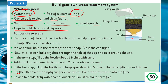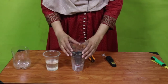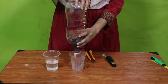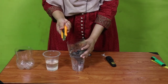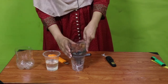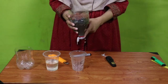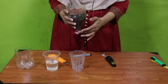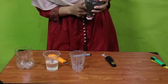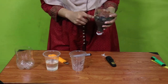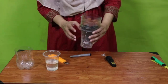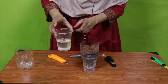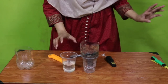First of all, we need a water bottle. I took a water bottle and cut it into two halves using a paper cutter. After that, I took a clean cotton cloth and sealed the mouth of the bottle with it using a rubber band. Then I put sand at the very bottom, then small gravels — bajri — above that, and then large gravels on top. I also have a cup for the clean water and a cup with dirty water that we will filter.